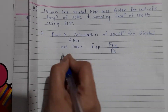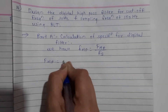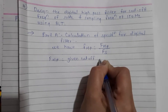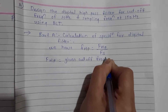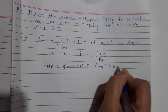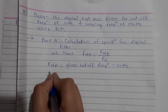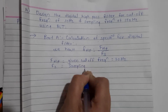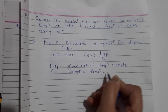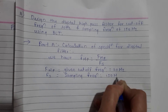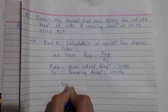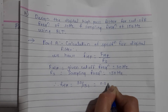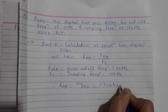F_HP is equal to the given cutoff frequency. The given cutoff frequency is 30 Hz and F_S is the sampling frequency, which is 150 Hz. Therefore F_HP is equal to 30 divided by 150, which is 0.2 cycles per sample.